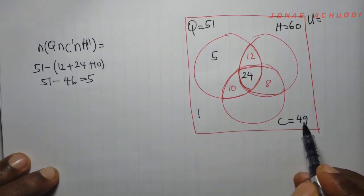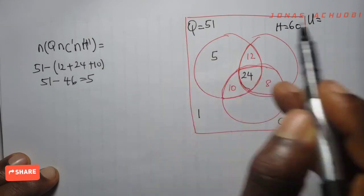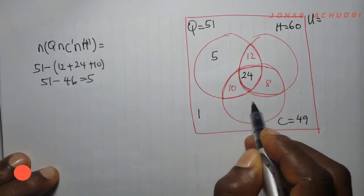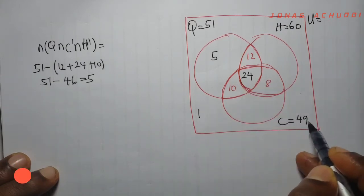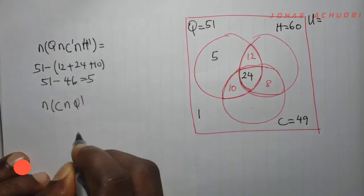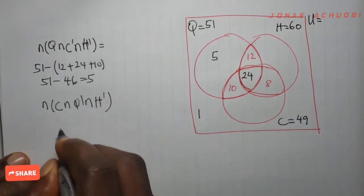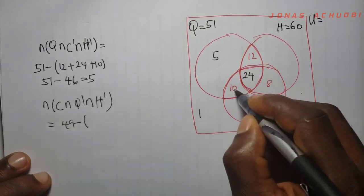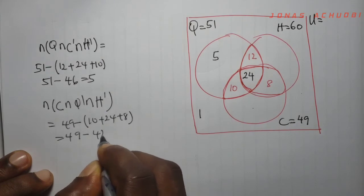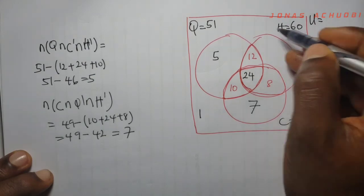Similarly, out of the 49 persons that liked crunches bread, 8 liked crunches and happy food only, 10 liked crunches and high quality only, and 24 liked all three. To find those that liked crunches alone, we subtract the sum of these three intersecting regions from 49: 49 minus (10 + 24 + 8) = 49 minus 42 = 7. So 7 persons liked crunches and not high quality and not happy food.